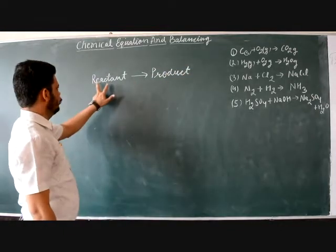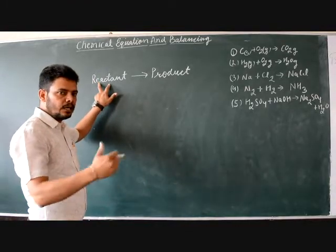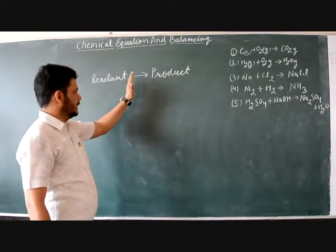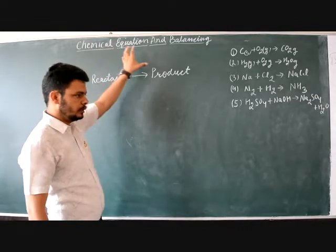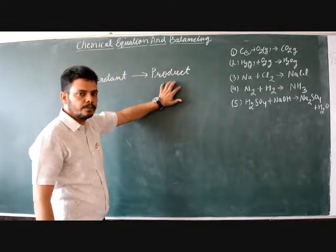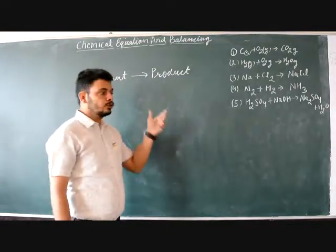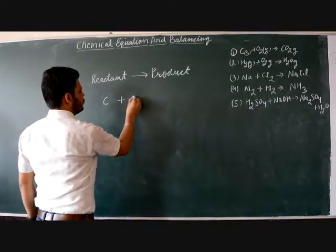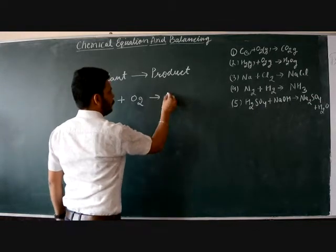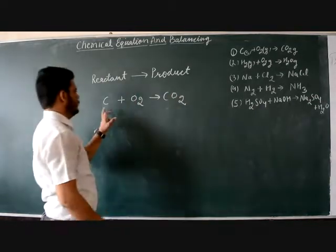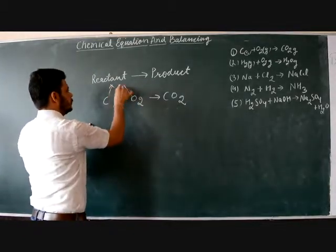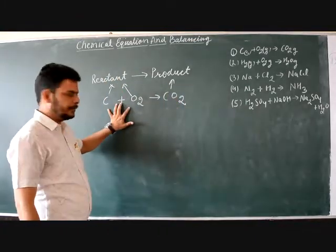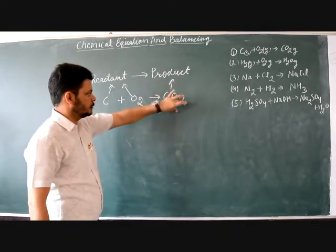Let's take an example. Those substances which are undergoing chemical changes are known as reactants, and the arrow separates them. The arrow indicates that these chemical substances are undergoing chemical changes to form a new substance — the product. So the new substance formed after a chemical reaction is the product. For example: carbon plus oxygen forms carbon dioxide. Carbon and oxygen are the two reactants, and carbon dioxide is the product.